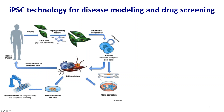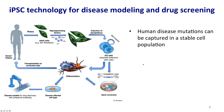You can perform genome editing, for example, to correct a mutation, and then differentiate the cells into the desired cell type that may be used as cell replacement therapy candidates, or differentiate them into cell types for modeling disease or screening for drugs.